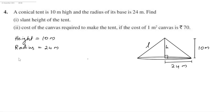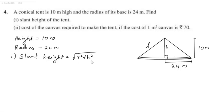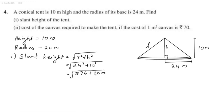The slant height is equal to the square root of r squared plus h squared, which is equal to the square root of 24 squared plus 10 squared. The square of 24 is 576 and 10 squared is 100. So 576 plus 100 under the root gives us 676 under the root, which is equal to 26 meters.